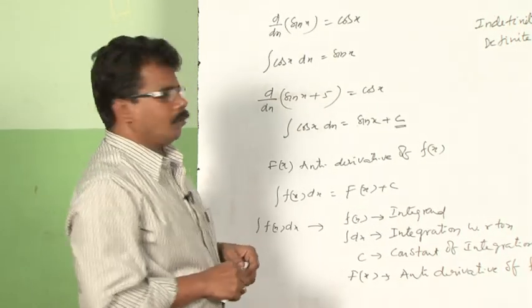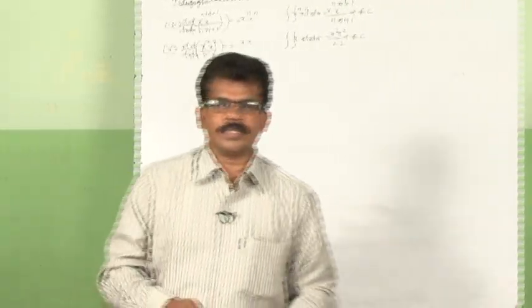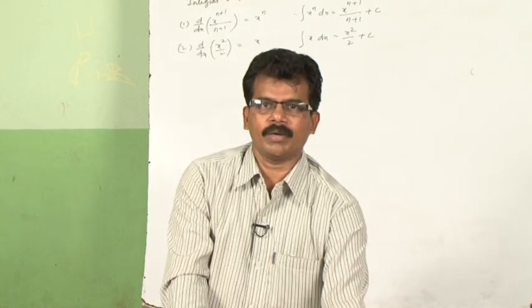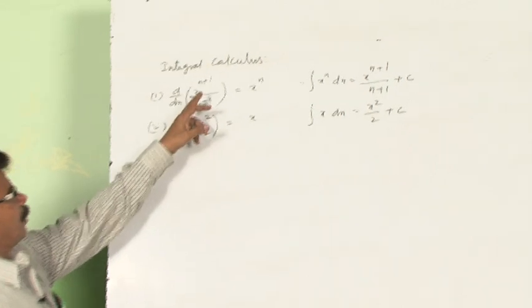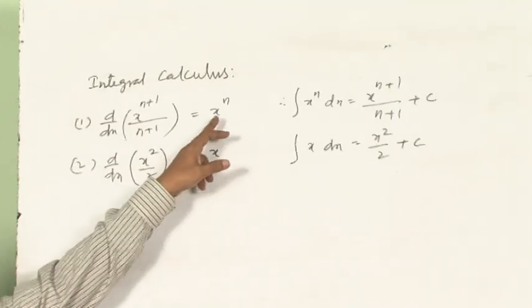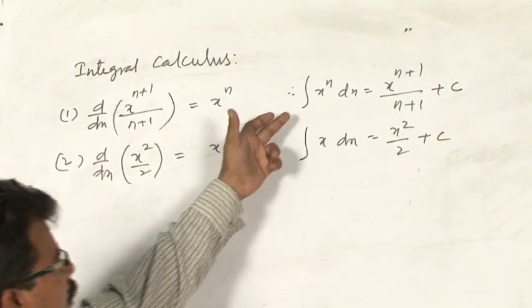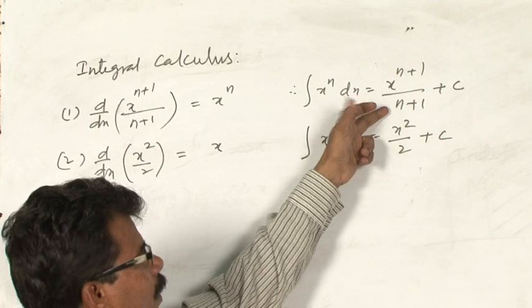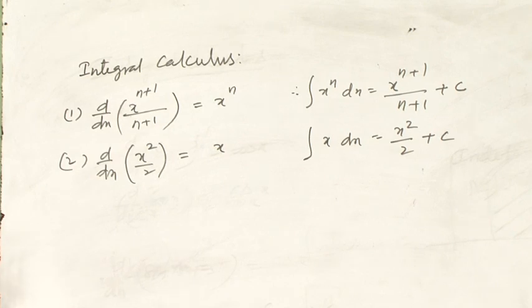Let us recall derivatives of some functions and find their corresponding integrals. First, d by dx of x^(n+1) by (n+1) is equal to x^n. Therefore, integral of x^n dx is equal to x^(n+1) by (n+1) plus c. Also, d by dx of x² by 2 is equal to x, so integral of x dx is equal to x² by 2 plus c. Next, d by dx of log x is equal to 1 by x.